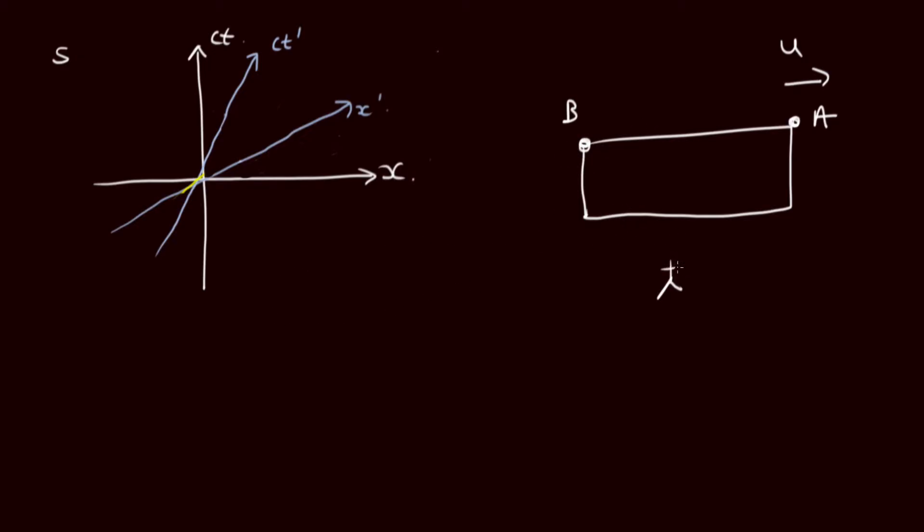Our observer on the track here, we'll call them in the S frame. That's the white axis, and we'll put our passenger inside the train in the S prime frame, which is these blue axes here.